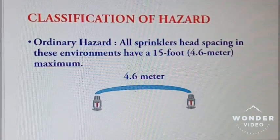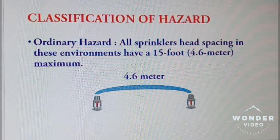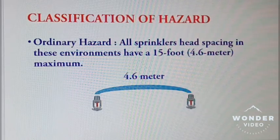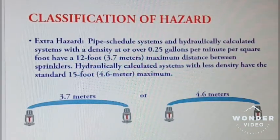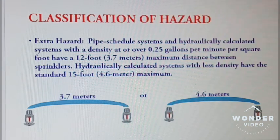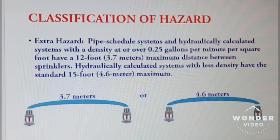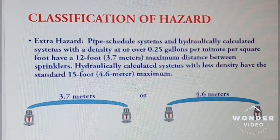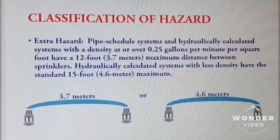Ordinary hazard: all sprinklers in this environment have a 15 feet, equivalent to 4.6 meters, of maximum spacing between them. Hydraulically calculated systems with less density also have the standard 15 feet, equivalent to 4.6 meters, of maximum spacing between them.